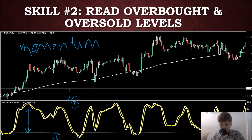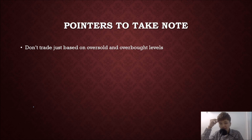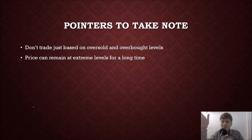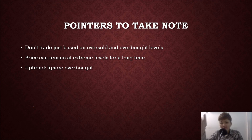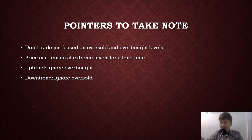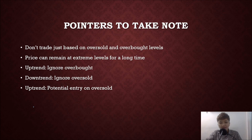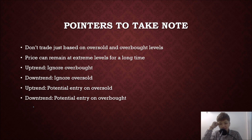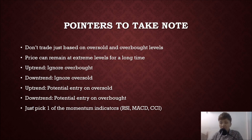You don't trade just based on overbought and oversold levels. It doesn't mean that if it's oversold you must buy, or if it's overbought you must sell — price can remain at those levels for a long time. In an uptrend, ignore overbought signals and look for entries when the indicator reaches oversold. In a downtrend, ignore oversold signals and look for entries when it reaches overbought, because overbought signals in an uptrend are likely to be false. Pick one momentum indicator — at most two — because most of the time they give you the same signals.